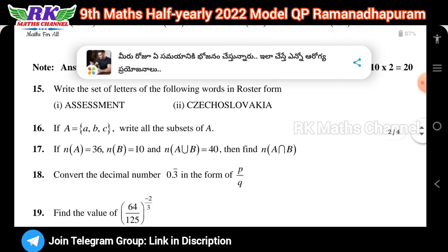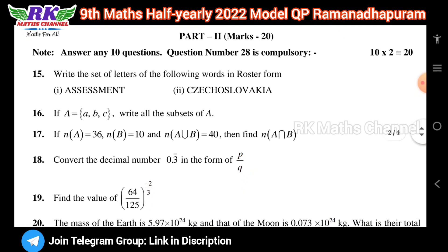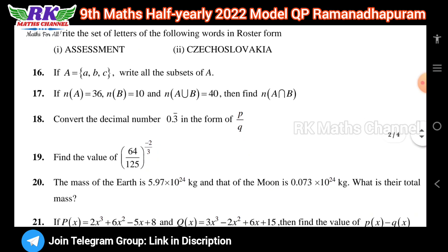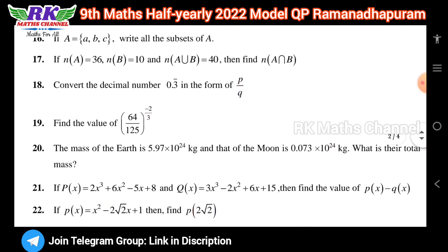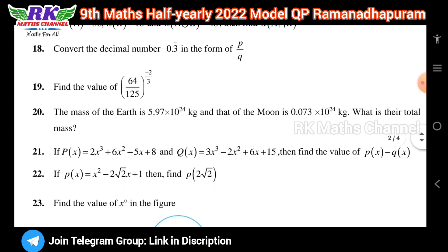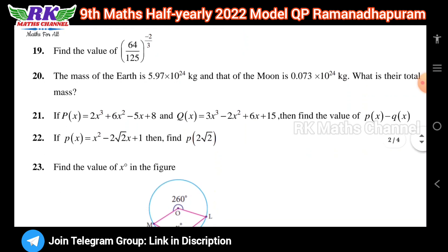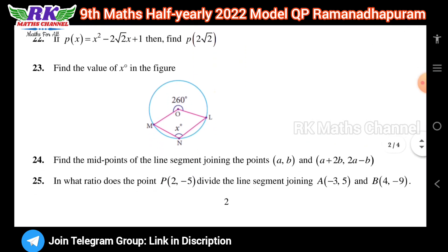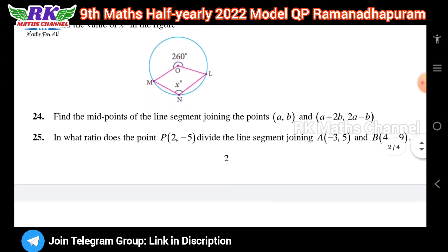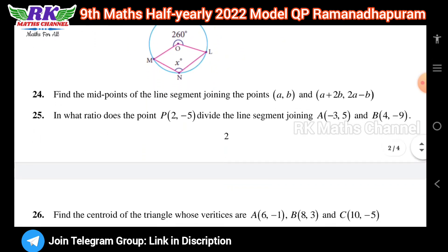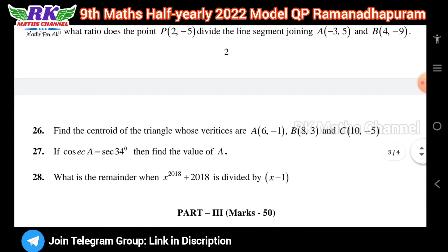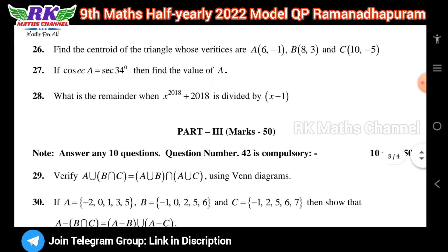For part two, there are ten two-mark questions. Question number 28 is the compulsory question. All the two-mark questions are easy, so the two-mark section will be easy overall.